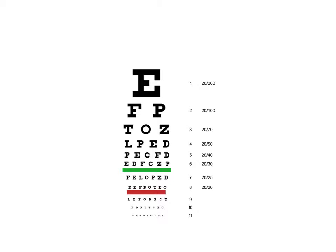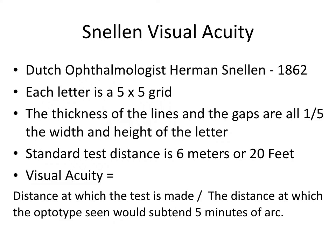The first topic here is visual acuity. This is a Snellen visual acuity chart, named after Dutch ophthalmologist Herman Snellen, who designed it in 1862. The basis of this chart is that each letter is a five-by-five grid — they're all essentially square. The thickness of the lines and the gaps are all one-fifth the width and height of the letter.